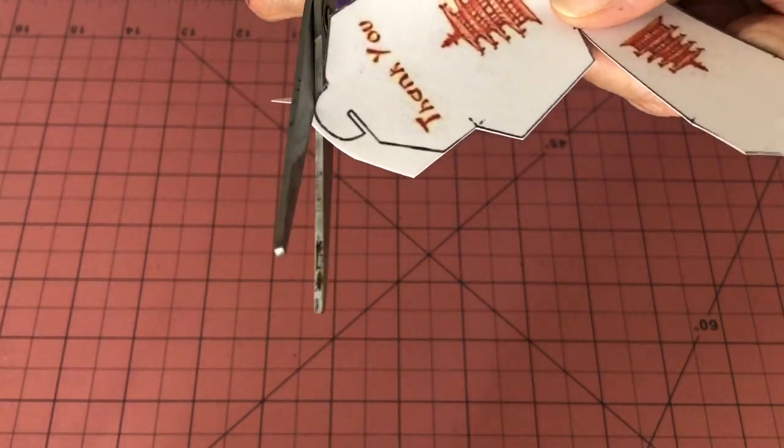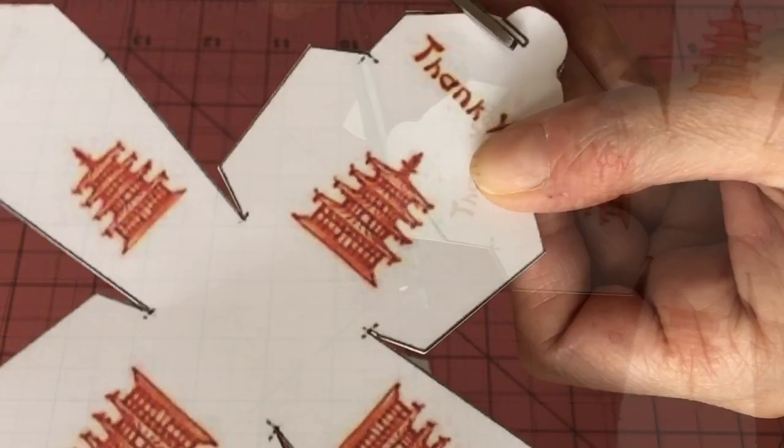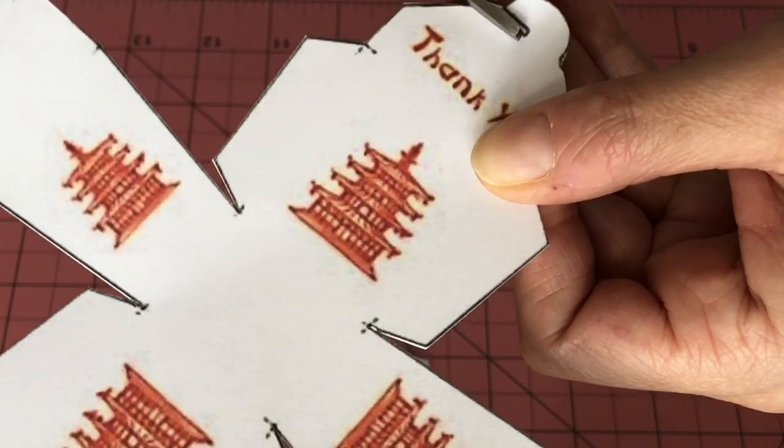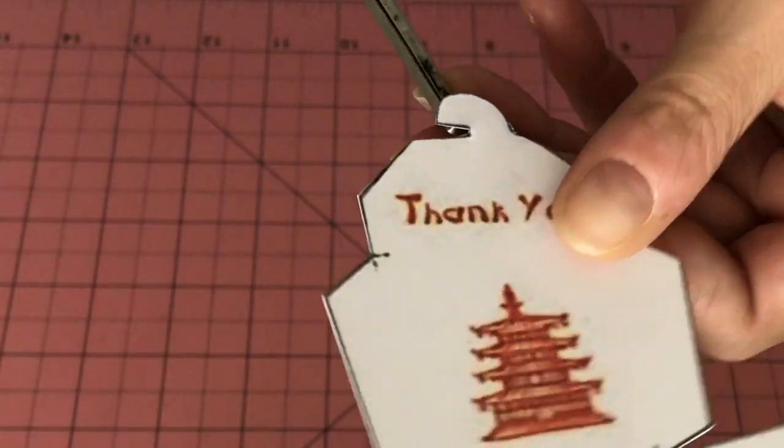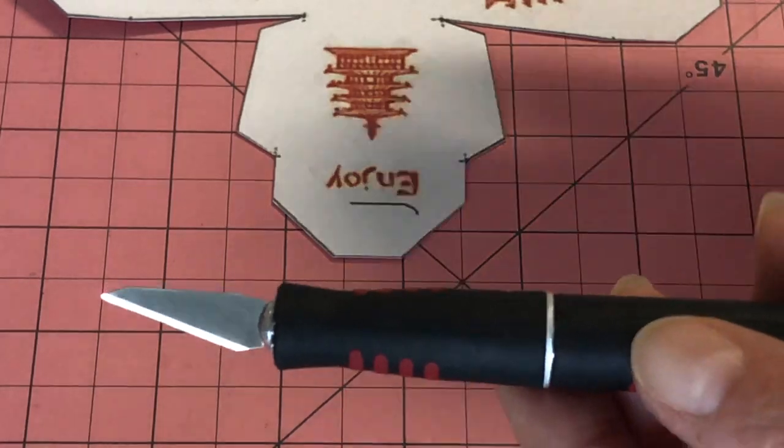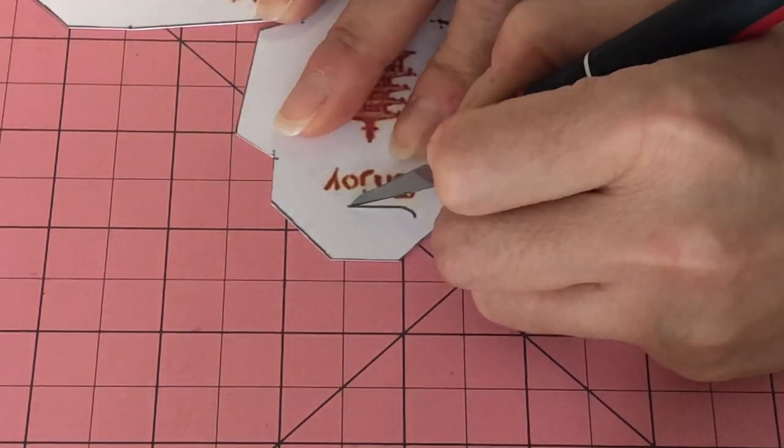Next cut it out taking extra care around the hook section that will close up the box. With an X-Acto blade carefully cut the J-shaped slit.